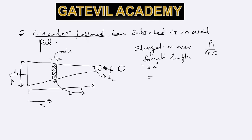For this bar of very small length dx, the elongation will use load P, length dx, and the area A at that cross-section, along with modulus of elasticity E. We now need to calculate the area at distance x.